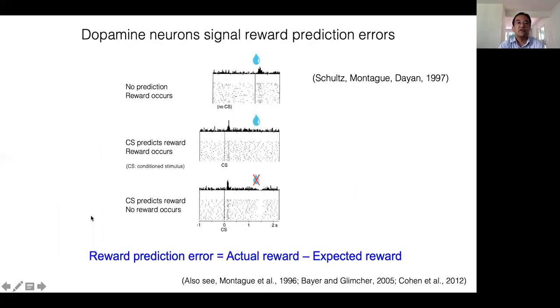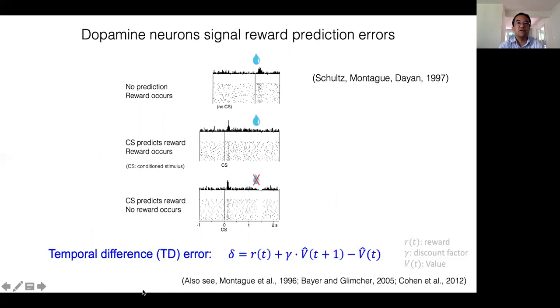So what is reward prediction error? Reward prediction error here is defined by the difference between actual and expected reward. More precisely, reward prediction error can be defined by this equation. This type of prediction error is called a temporal difference error, because this contains difference between values of consecutive time points, T and T plus 1, combined with reward at time T.